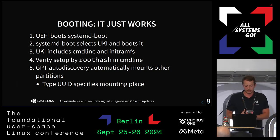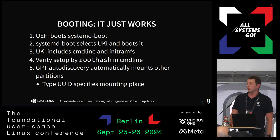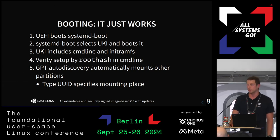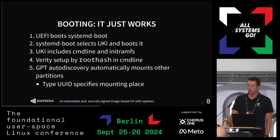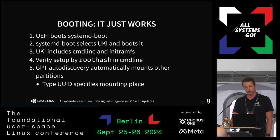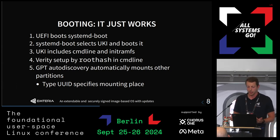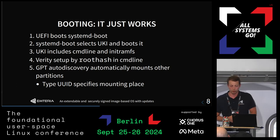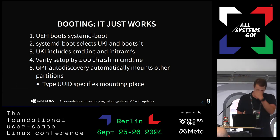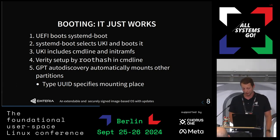Systemd also includes GPT auto-discovery. So if you have any other partitions — for example, a var partition or, in our case, an SRV partition — just using the type UUID specifies its mounting place. You don't need any fstab entry. It will just mount this automatically. In my case, this worked flawlessly almost on the first try.